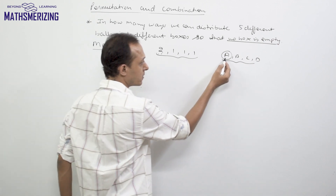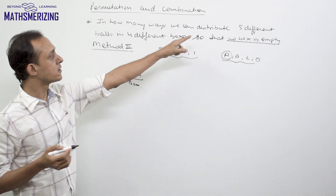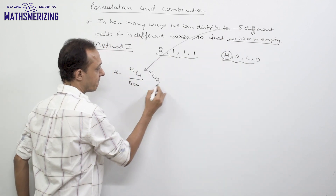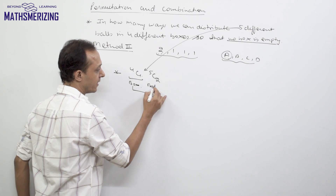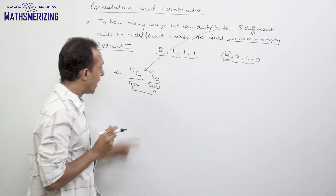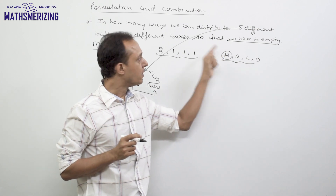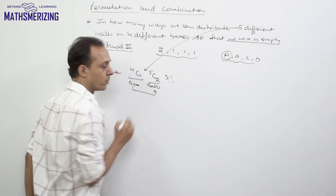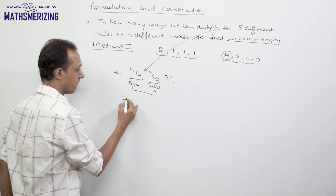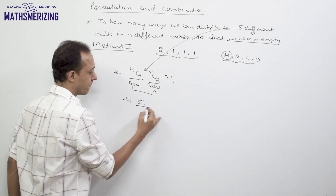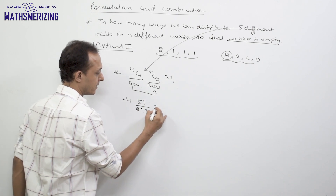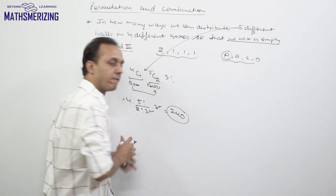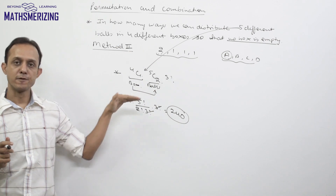For the selected box, I'll choose 2 balls from the 5 given balls, which is 5C2. After this, I'm left with 3 balls and 3 boxes, and these can be arranged in 3! ways. So the total is 4C1 × 5C2 × 3! = 4 × 10 × 6 / (2!) × 3! which again gives 240. So this is another way of solving the question.